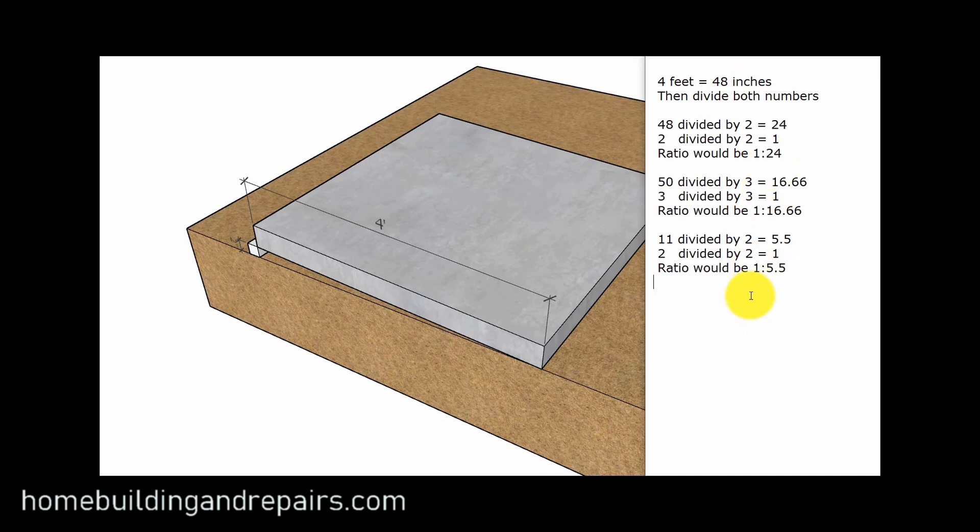Like I said, most ratios are going to be even numbers. You know, 1 in 24, 1 in 12. For roofs, you might have 3 in 12, 5 in 12, stuff like that. But the ratio is going to be our most common number used in construction.